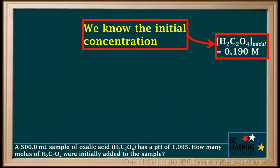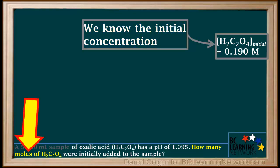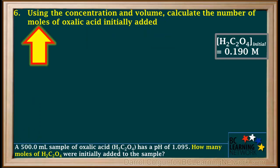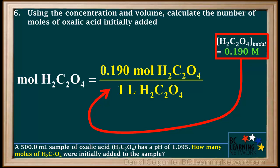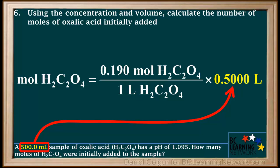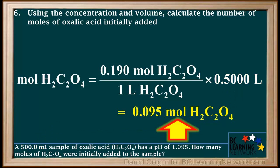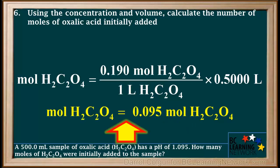We now know the initial concentration of oxalic acid, but the question asks for the number of moles. So in step 6, we use the concentration and volume to calculate the moles of oxalic acid initially added to the sample. The moles of H2C2O4 equals 0.190 moles per liter times the volume of the sample, 0.5000 liters, which equals 0.095 moles of H2C2O4.